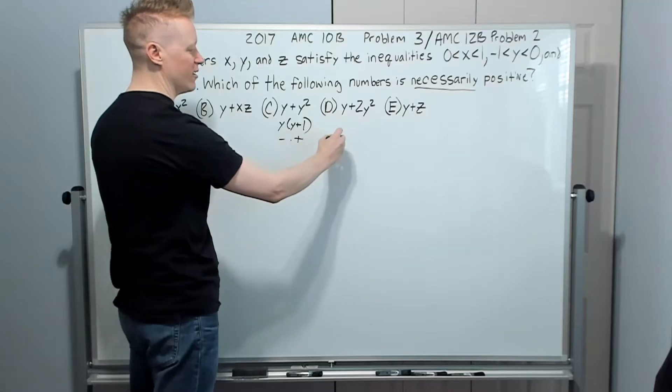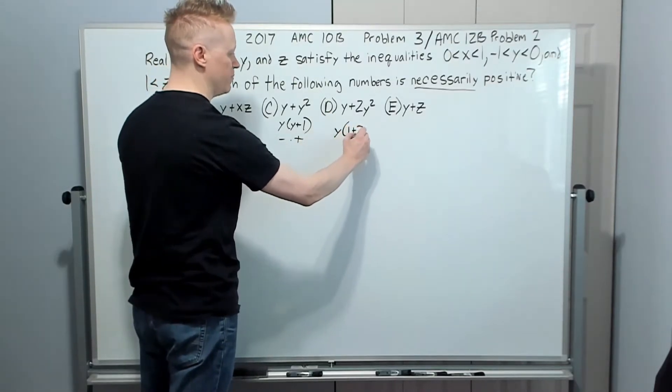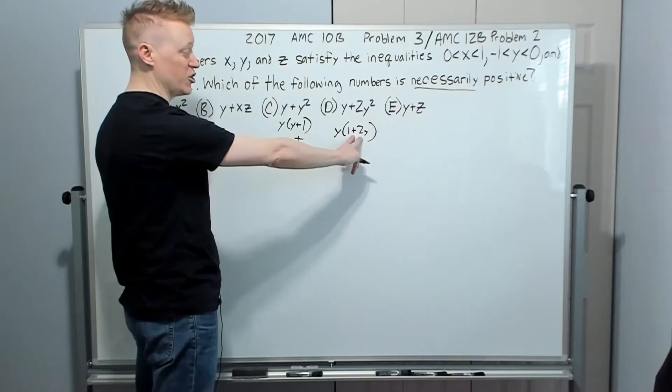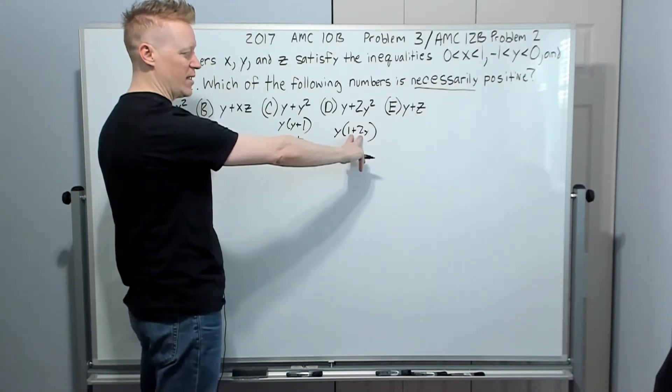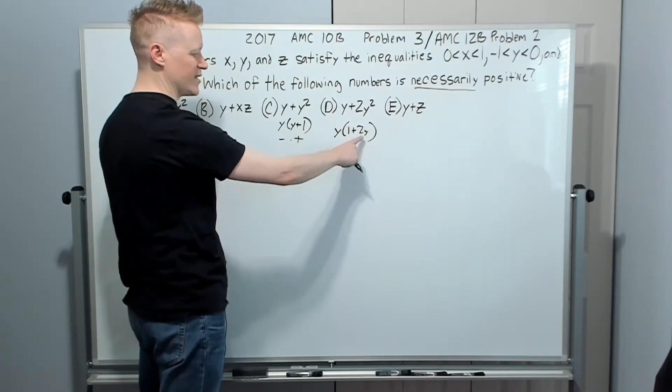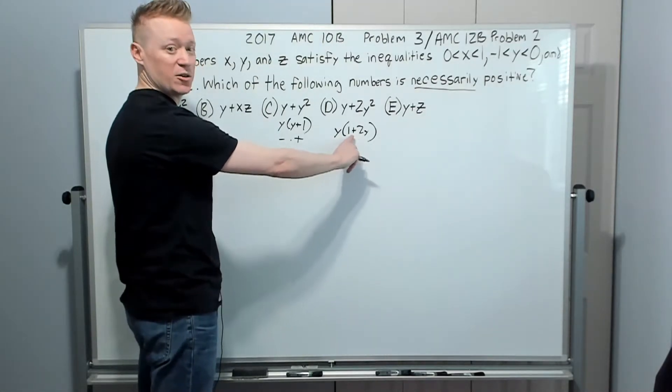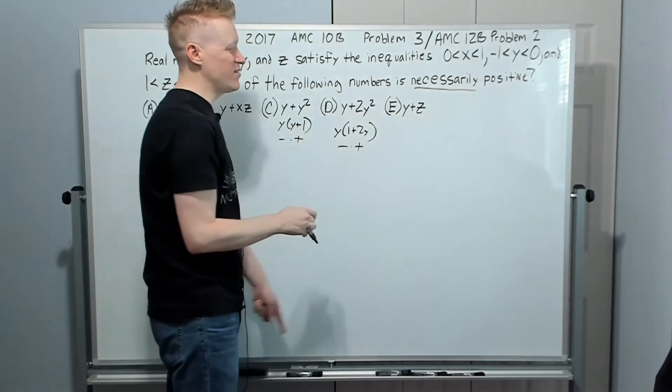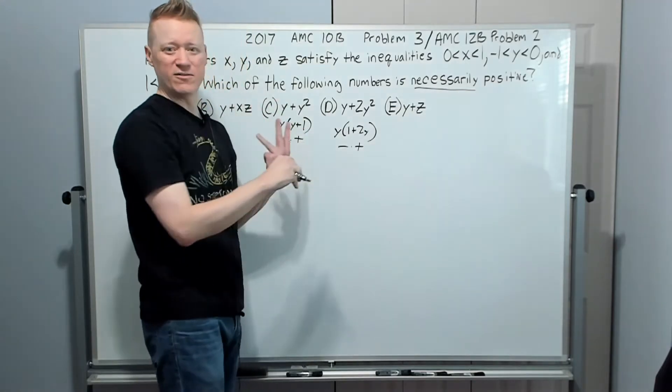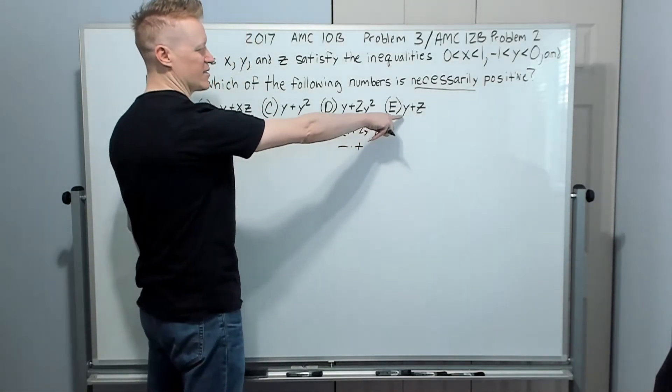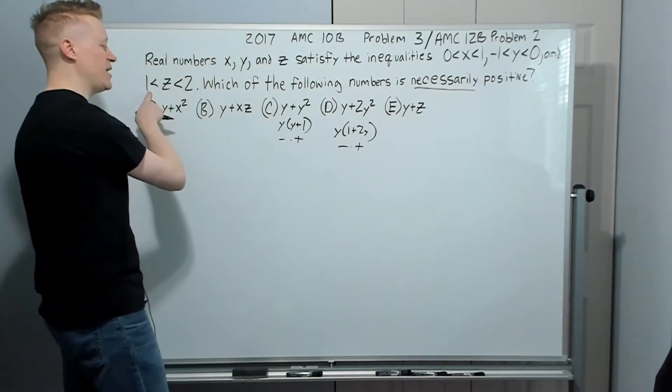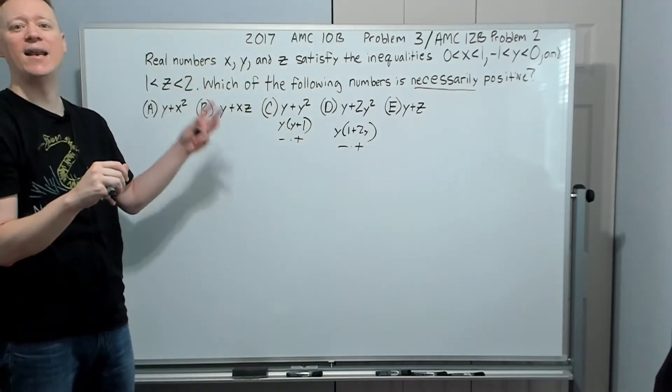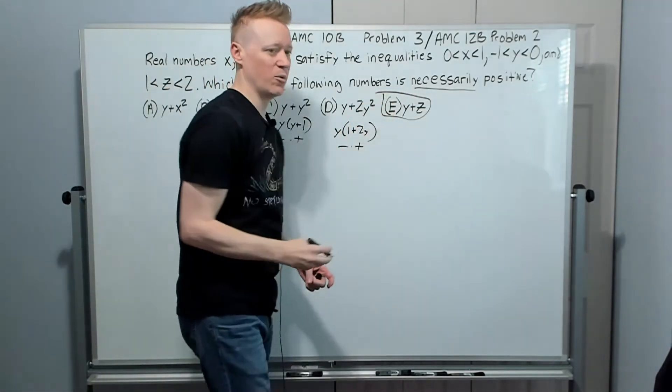The same thing is going to happen here. If you factor out a Y, you will get one plus two Y. This could stay negative. Actually it could, but it doesn't have to. So because I could find a way to make this positive, let's say Y is negative 0.1, then this becomes 0.8, one plus negative 0.2. So I could have a positive times a negative here. Again, doesn't work. That leaves this. And again, if this doesn't work, we go back and reevaluate our thinking. So Y being some number between negative one and zero and Z being more than one in the positive direction. Even if it's 1.01 and Y is 0.9999, it's guaranteed to be positive and we're on to the next problem.